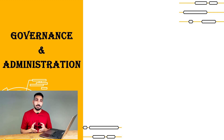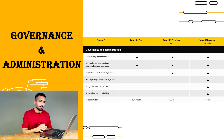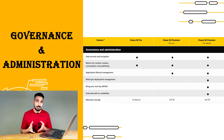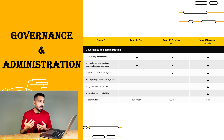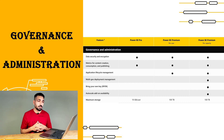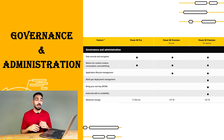The last category is governance and administration. Certain features are only available with Microsoft Premium Per Capacity, such as bring your own key, auto-scale, maximum storage, and multi-geo deployment. However, application lifecycle management — that means deployment pipelines — is also available in Microsoft Premium Per User. The remaining governance features are the same across the licenses.